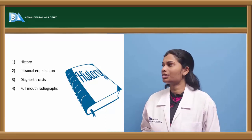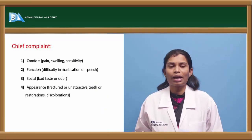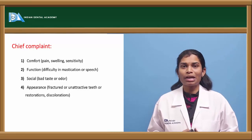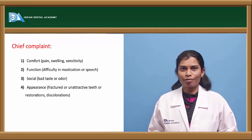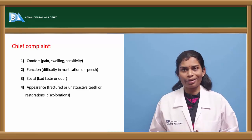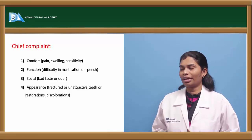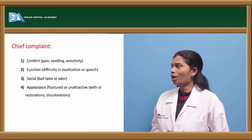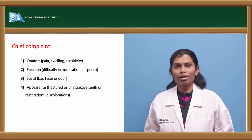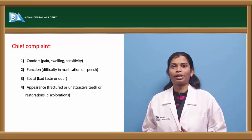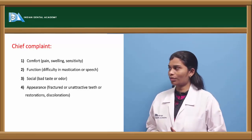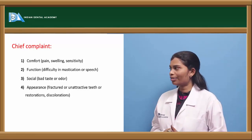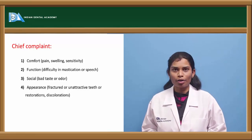History first includes the chief complaint, which can fall under four categories. The patient might come with problems related to comfort, such as pain, swelling, or sensitivity. The second is function — difficulty in speech or mastication. The third involves social problems related to bad odor and taste. The fourth is appearance — the patient might not be satisfied with their smile, such as fractured, unattractive, or abraded teeth.